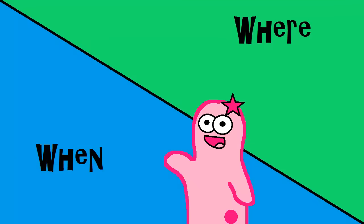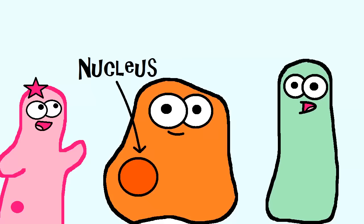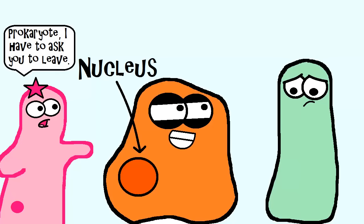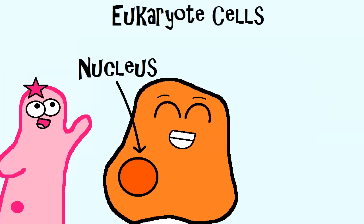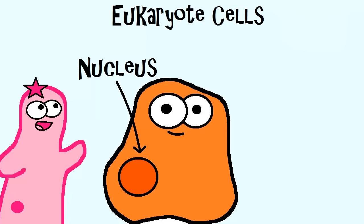First, let's talk about where and when. Where: it occurs in the nucleus, if the cell has a nucleus — remember, not all cells have a nucleus. This video is actually going to focus on the types of cells that do have a nucleus. They're known as eukaryote cells. Prokaryotes, which are cells that do not have a nucleus, do things a little differently. They also do DNA replication, but that is not going to be our focus for this clip.